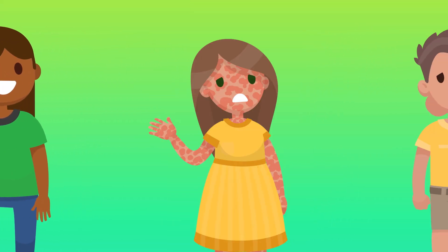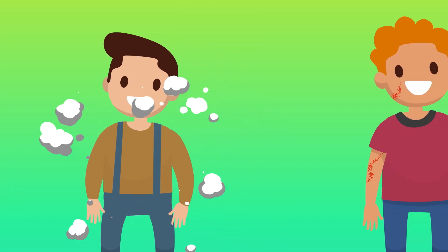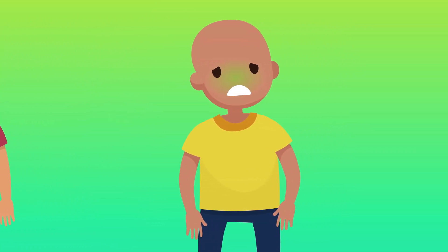Measles, mumps, chickenpox, shingles, and several other terrible maladies used to plague much of the population, but have since been quashed by vaccines made using weakened viruses.